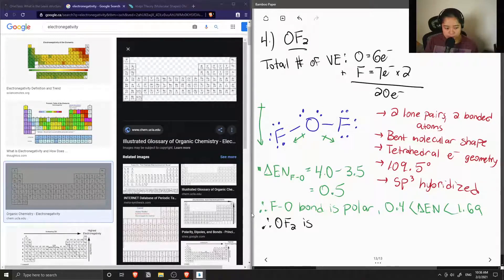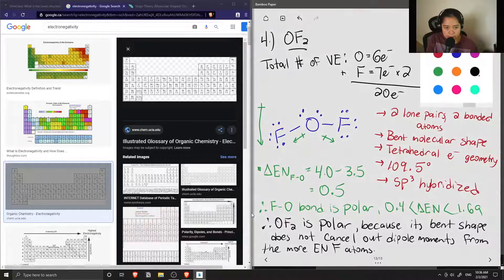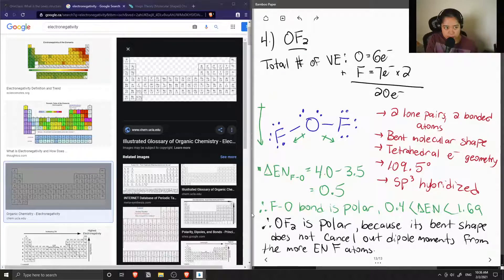Therefore, this molecule is polar. This is because its bent shape does not cancel out the dipole moments from the more electronegative fluorine atoms. I'll also add that this is called a non-zero net dipole moment. So this is why our molecule is polar.